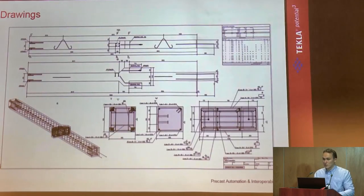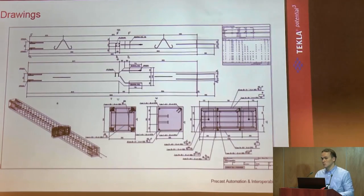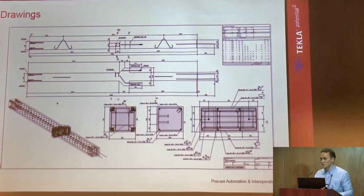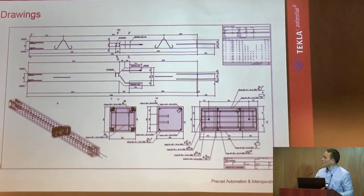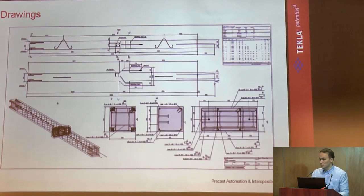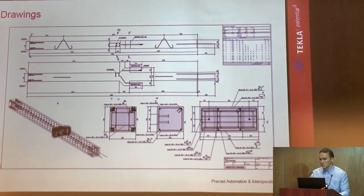We can also use reinforcement components, like with connections — including lifting anchors. We select the component, choose parameters: dimensions, rebar thickness, how many, how they are placed, and quite easily use them in the model. After the building is modelled, we generate drawings automatically according to our company style — columns with one style, beams with another, wall panels with or without reinforcement in different styles. With ready-made templates and rules, all the information shown is accurate and according to the model: measurements, geometry, embeds, reinforcement — everything needed for fabrication.